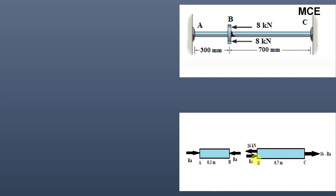The force at the section immediately right of B is 16 − RA, and the force at the section immediately left of C is also 16 − RA. Assuming 16 kN is greater than RA, for portion AB the force acting is compressive (equal to RA), and for portion BC the force acting is tensile (equal to 16 − RA).